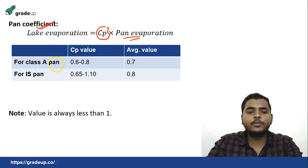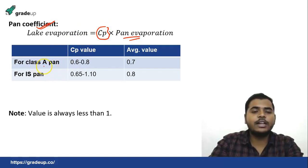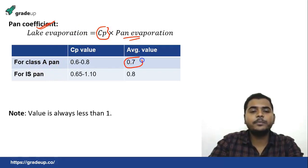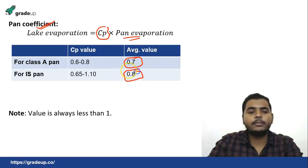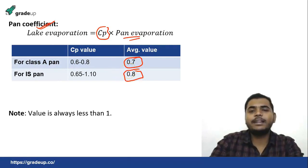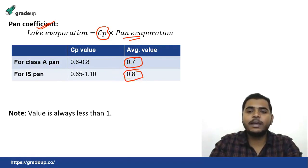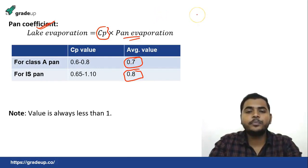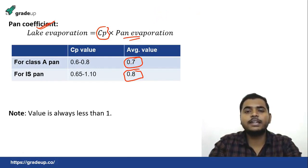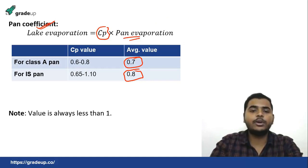The average Cp value for Class A pan is 0.7 and for IS pan it is 0.8. The IS pan has a higher Cp because evaporation there is 14 percent less due to screening, so we have to increase the Cp value. This will be helpful in numericals.